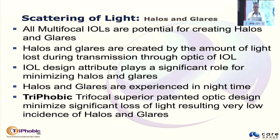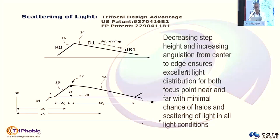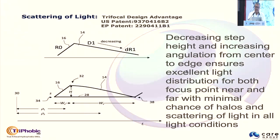As far as scattering and halos of light are concerned, all multifocal IOLs are potential for creating halos. Halos and glares are created by the amount of light that is lost. IOL design plays a significant role in minimizing halos and glares. The trifocal's superior patented optical design minimizes significant light loss, resulting in a very low incidence of halos and glares, due to its decreasing step height and increasing angulation from center to edge, ensuring excellent light distribution with minimal chance of halos and scattering in all light conditions.